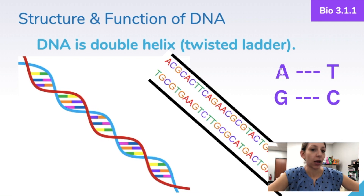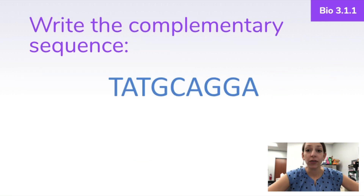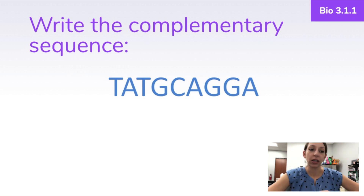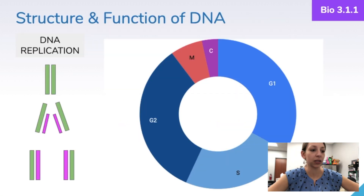You might want to remember the base pairing rules with a mnemonic like 'apple tree good cookie,' as long as you remember that A pairs with T and G pairs with C. So if you were asked to write the complementary sequence for a DNA strand, you just apply the base pairing rules. For example, if the strand starts with T-A-T, you would write A-T-A. T pairs with A, A pairs with T, G pairs with C, and so on until you've completed the entire sequence.